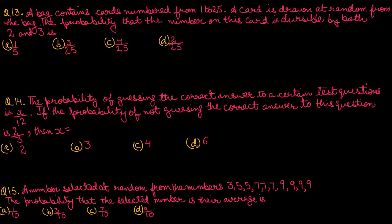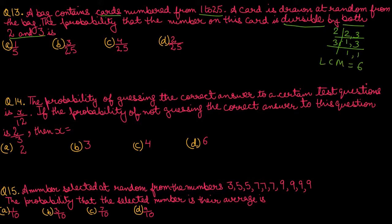Question number 13: A bag contains cards numbered 1 to 25. A card is drawn at random. The probability that the number on the card is divisible by both 2 and 3 — meaning divisible by 6. From 1 to 25, the multiples of 6 are: 6, 12, 18, 24. That gives 4 favorable cases, and total cases are 25. So probability is 4 upon 25. Option number C is correct.